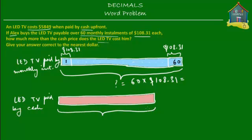So this is $5,849. And what we have to find out is how much this is equal to, which is the difference between the installment price and the cash price. So this is what we have to find out.